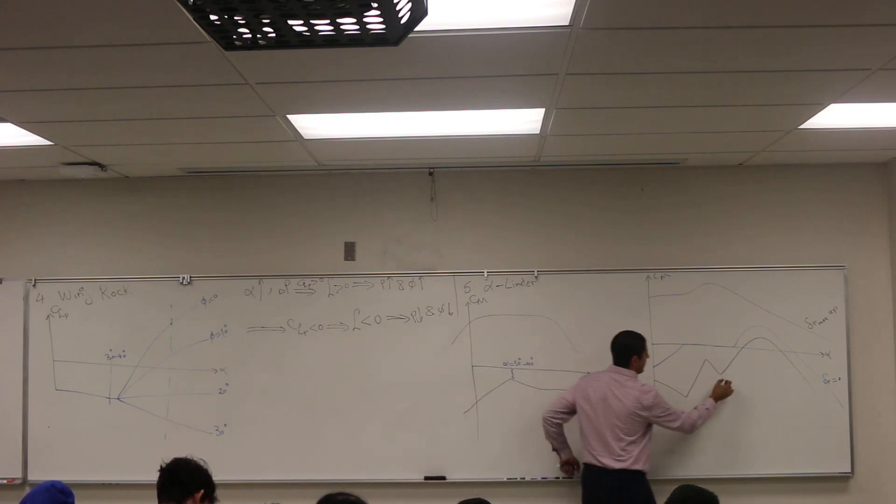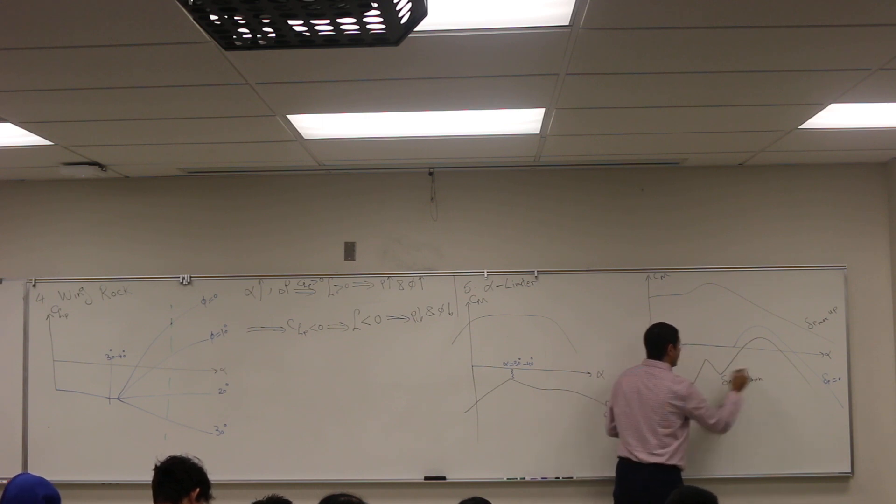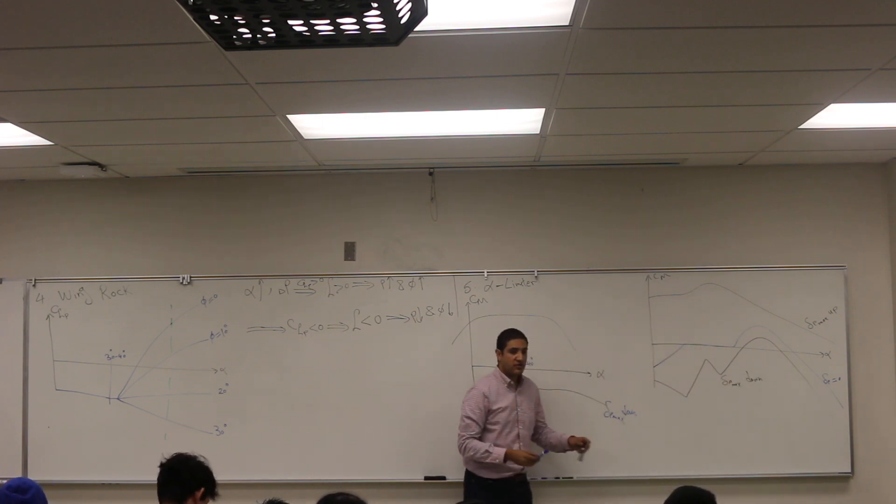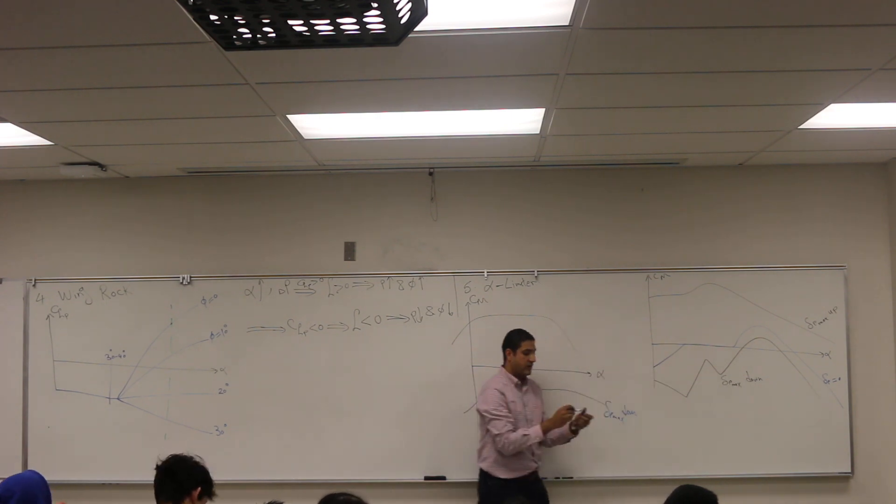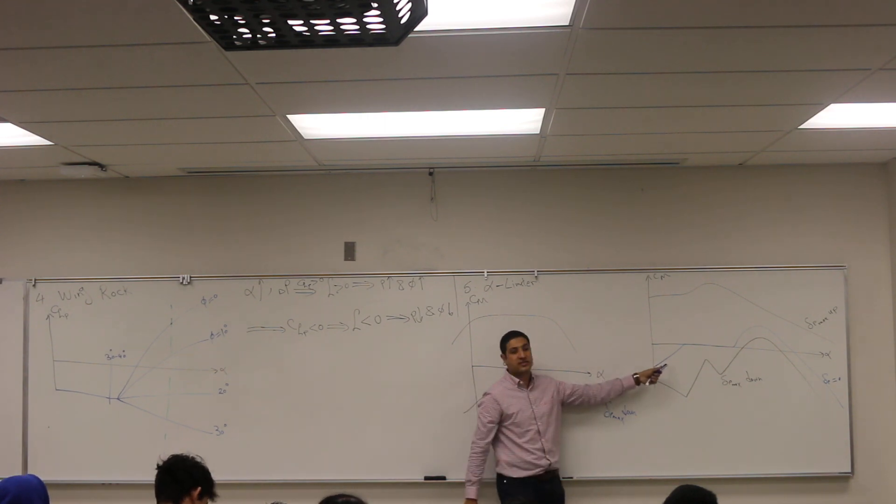This curve is delta elevator maximum down. Okay, two things here. First, what can you infer from this? So for a small alpha, what can you infer? The blue curve is at zero delta elevator.